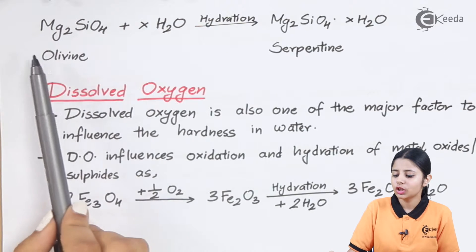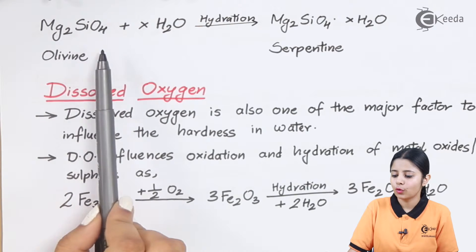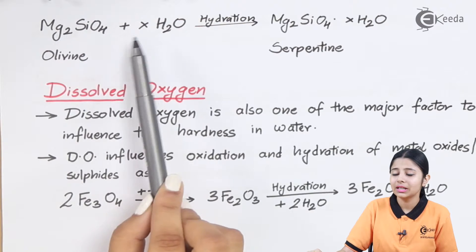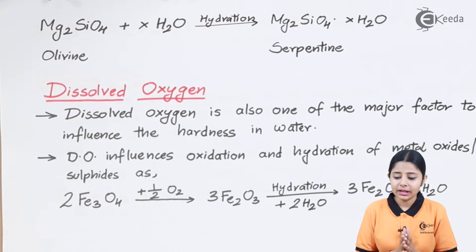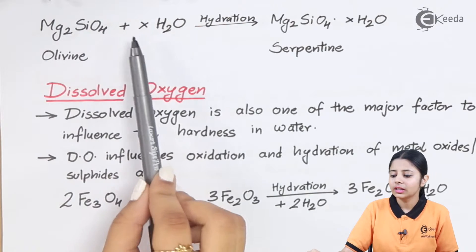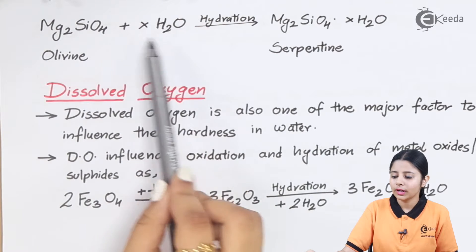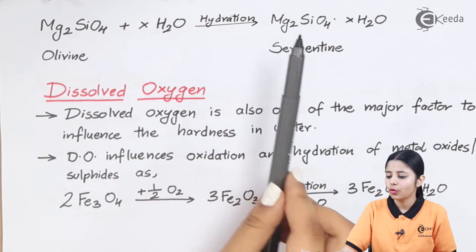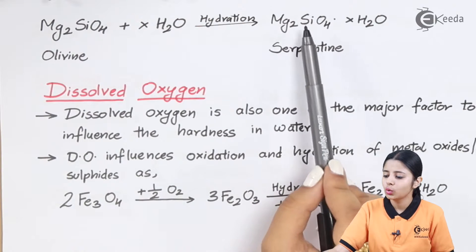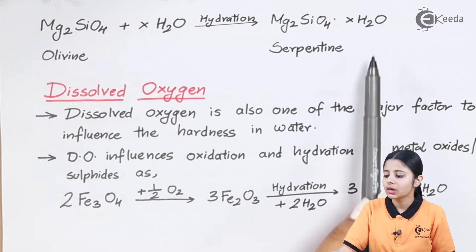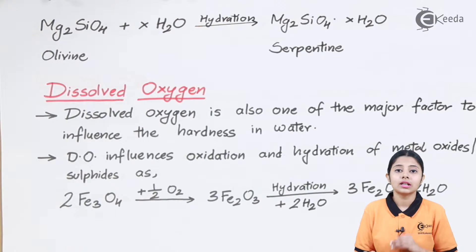Similarly, Mg2SiO4 (olivine) plus XH2O undergoes hydration, forming Mg2SiO4·XH2O, known as serpentine. Here X represents any number of H2O molecules depending on the type of olivine. This serpentine is soluble in water.